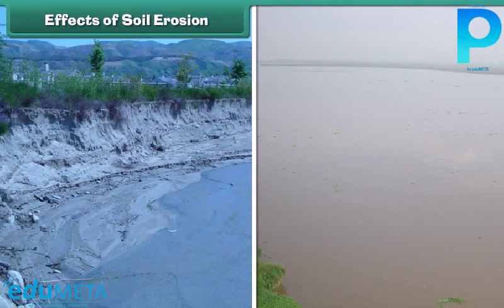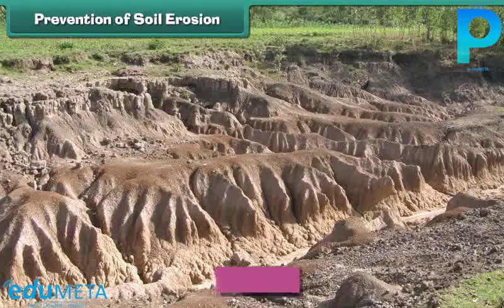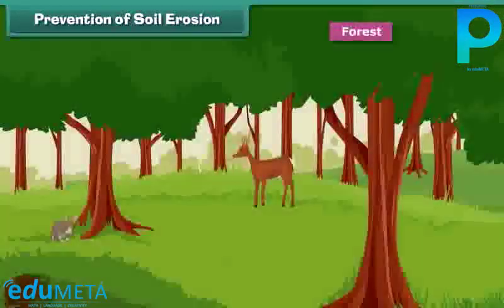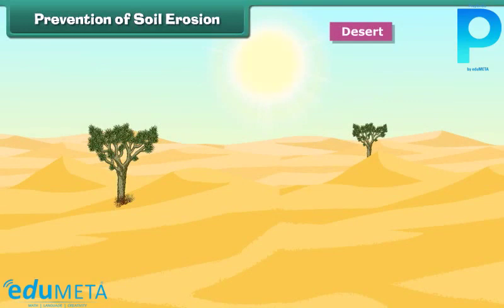The eroded soil deposits in water resources like rivers and lakes, polluting them. Soil erosion is a major environmental problem that has affected regions all over the world, from forests to deserts. Thus, it is the need of the hour to conserve the soil by preventing soil erosion.